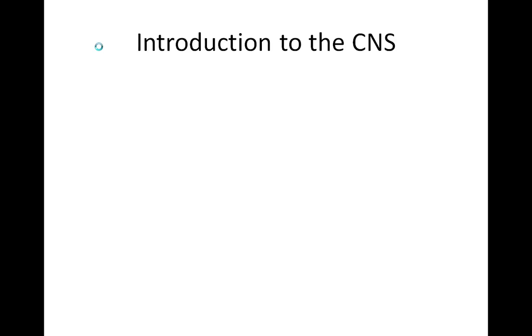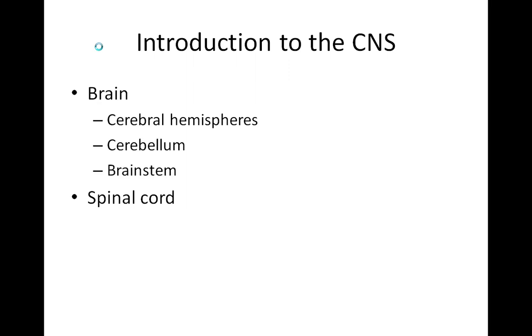Before we start, however, we should discuss the concept of the central nervous system, or the CNS. Basically, the central nervous system is defined as the brain and the spinal cord. The brain itself has several parts. These include the cerebral hemispheres, the cerebellum, and the brainstem.